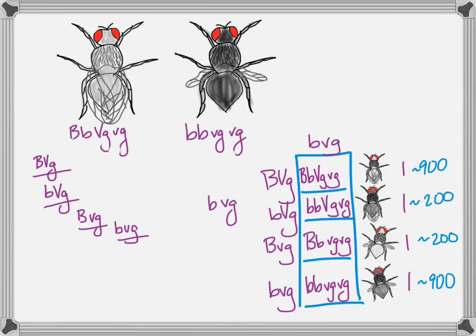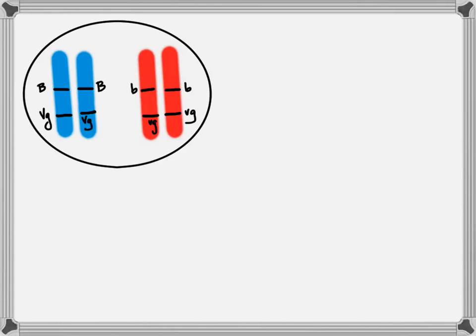So, what's going on? Why are there so many more of the parental phenotypes and not so many of these recombinant phenotypes? Well, what's going on is that these genes are linked. We know that there are way more genes than there are chromosomes, and so it stands to reason that a chromosome would have many genes along its length.